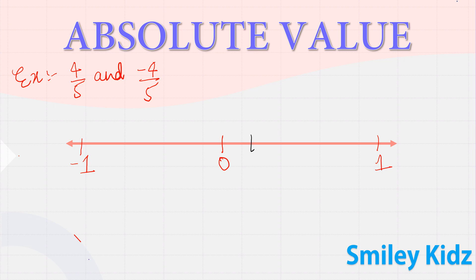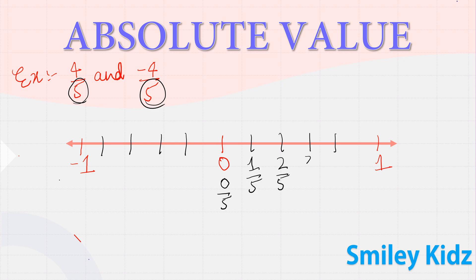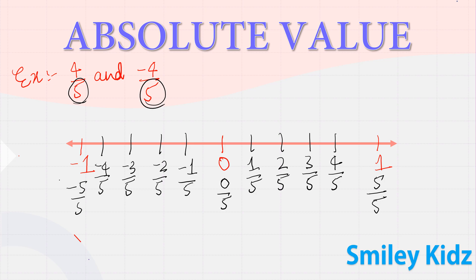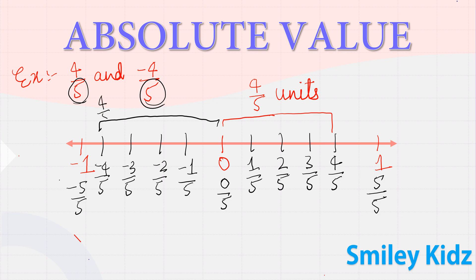Divide the number line into five equal parts, as the denominator of the given rational number is five. This gives us zero by five, one by five, two by five, three by five, four by five, and five by five which equals one. On the negative side: minus one by five, minus two by five, minus three by five, minus four by five, and minus five by five which equals minus one. The distance between zero and four by five is four by five units, and the distance between zero and minus four by five is also four by five units.